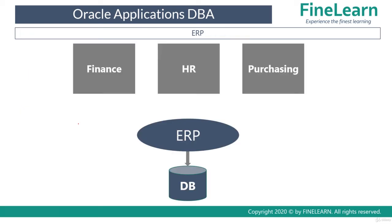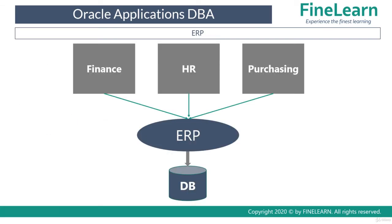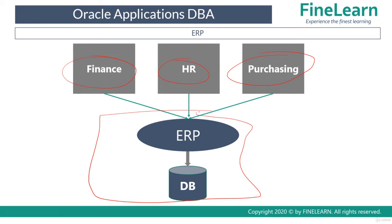Now let us see what is an ERP. An ERP is basically nothing but a single software which has a centralized database to manage all the business functions of the enterprise. For example, my finance department uses ERP, my HR department uses ERP, and my purchasing department also uses ERP — which is a single software. What happens is when you use a single software to manage all the business functions, you have the data at one place and all the departments can communicate through the same application easily.